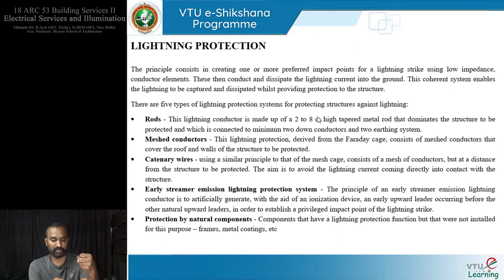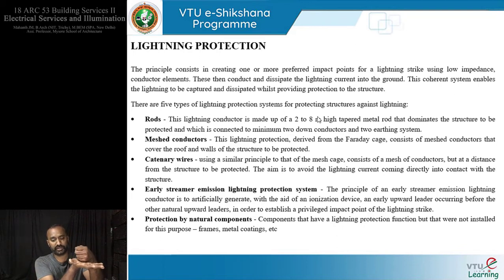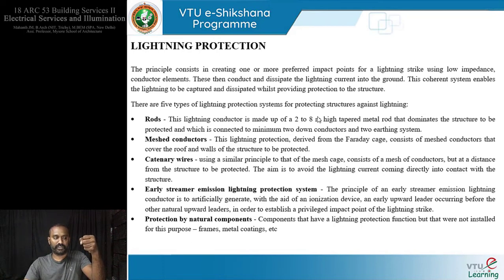The principle of lightning protection consists of creating one or more preferred impact points — strategically introduced at the top of the building — using low-impedance conductors. These capture and dissipate the lightning current into the ground. This coherent system enables lightning to be captured and dissipated while providing protection to the structure below. The idea is simple: introduce a preferred impact point for lightning to strike, which is a good conductor with relatively low impedance and resistance, and channel the charge to the ground.